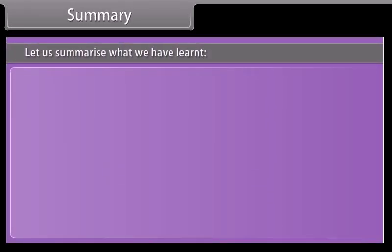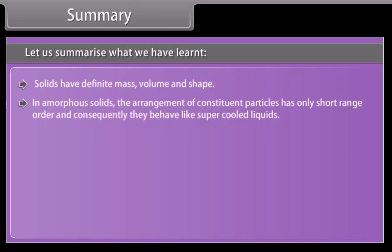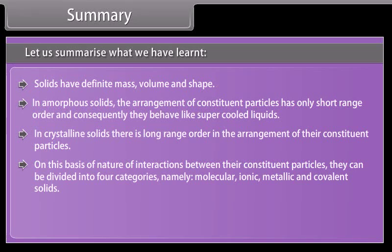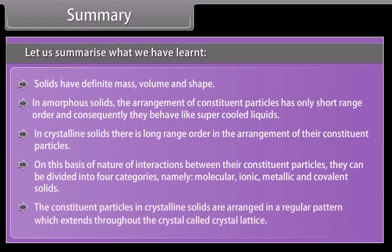Let us summarize what we have learned. Solids have definite mass, volume and shape. In amorphous solids, the arrangement of constituent particles has only short range order and consequently they behave like super cooled liquids. In crystalline solids, there is long range order in the arrangement of their constituent particles. On the basis of nature of interactions between their constituent particles, they can be divided into four categories: molecular, ionic, metallic and covalent solids. The constituent particles in crystalline solids are arranged in a regular pattern which extends throughout the crystal called crystal lattice.